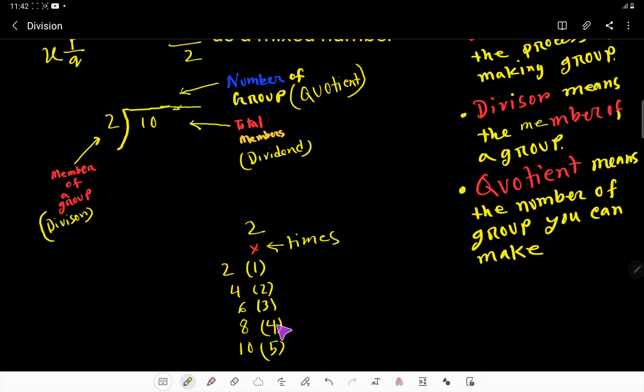That is 2 times 1 equals 2, 2 times 2 equals 4, 2 times 3 equals 6, 2 times 4 equals 8, 2 times 5 equals 10. So here 10, and here 10, so we have to stop here.